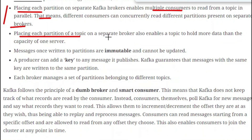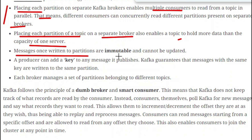Placing each partition of a topic on a separate broker also enables the topic to hold more data than the capacity of one server — that is another advantage of having partitions on separate brokers. Messages, once written to the partitions, are immutable and cannot be updated. Once messages are published on a partition, they cannot be edited, changed, or updated. A producer can add a key to any message it publishes, and Kafka guarantees that messages with the same key are written to the same partition.